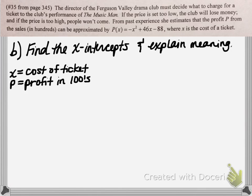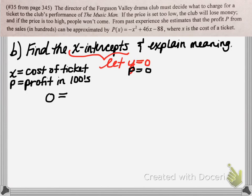Now let's move on to part B, where we want to find the x-intercepts. To find the x-intercepts of a function, we're going to let y equal 0. In this particular function, since our y value is represented by p, or profit, we're going to be letting p equal 0 — looking at where the profit is going to be 0. That gives us the equation: 0 equals negative x squared plus 46x minus 88, and we need to solve this quadratic equation.